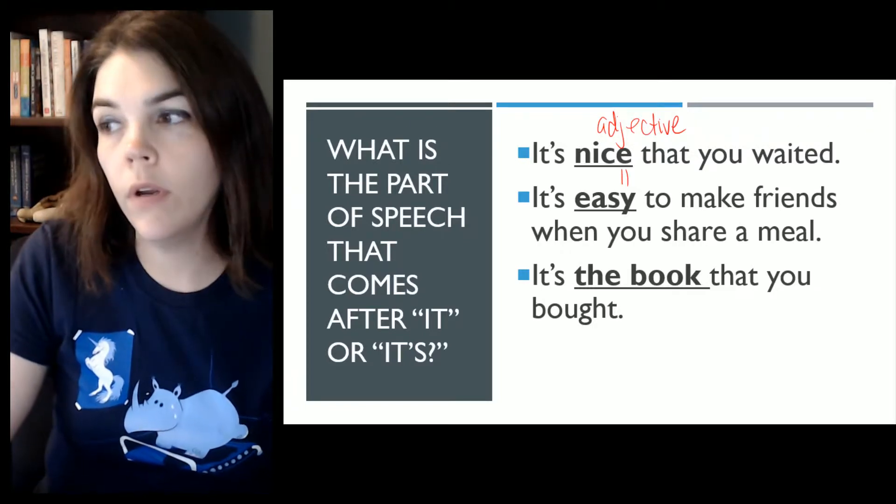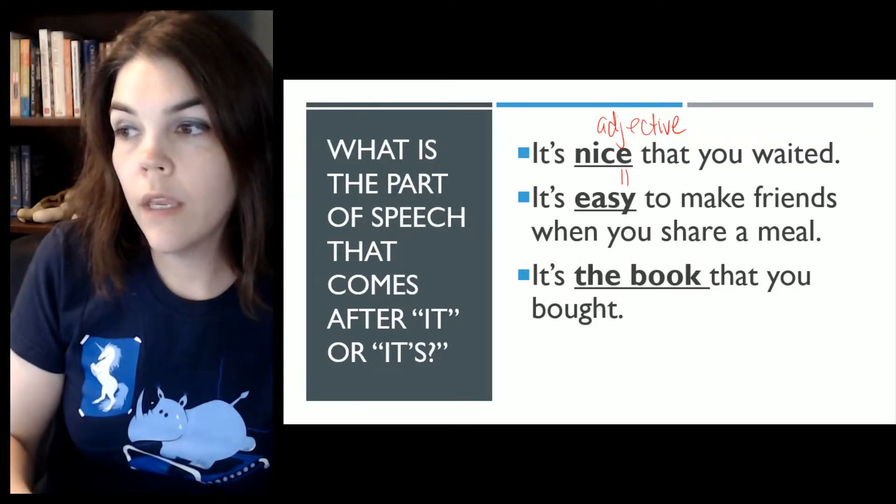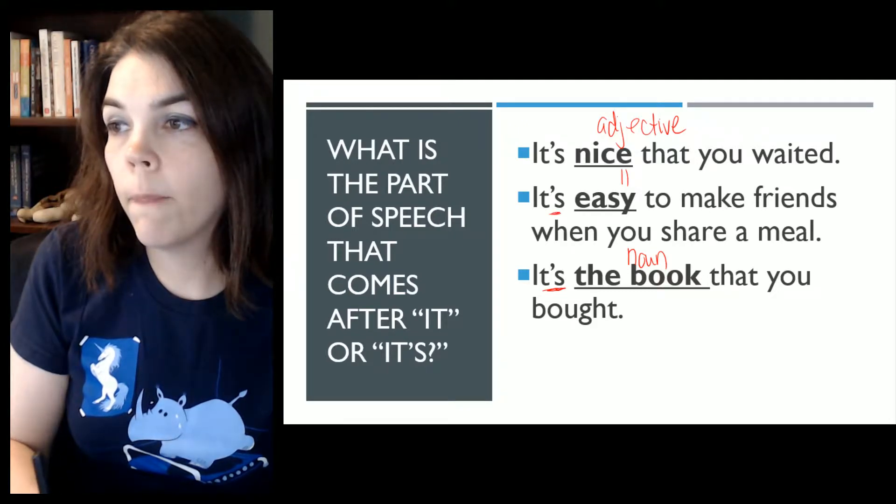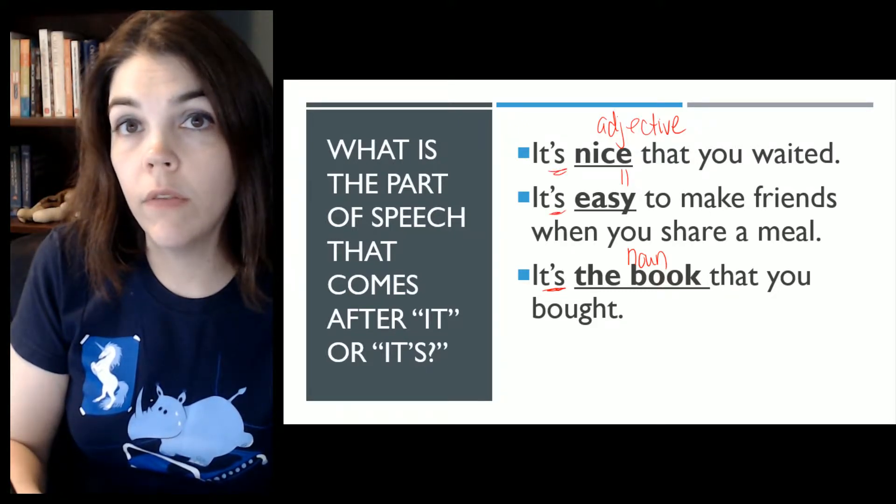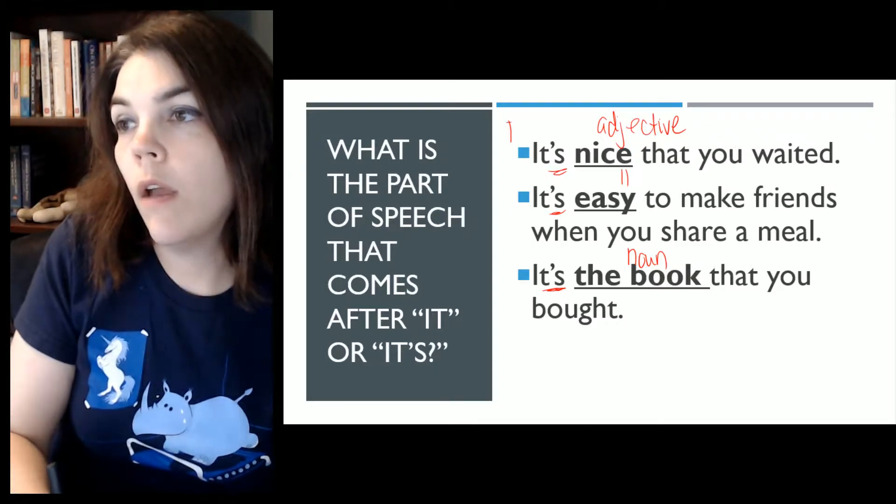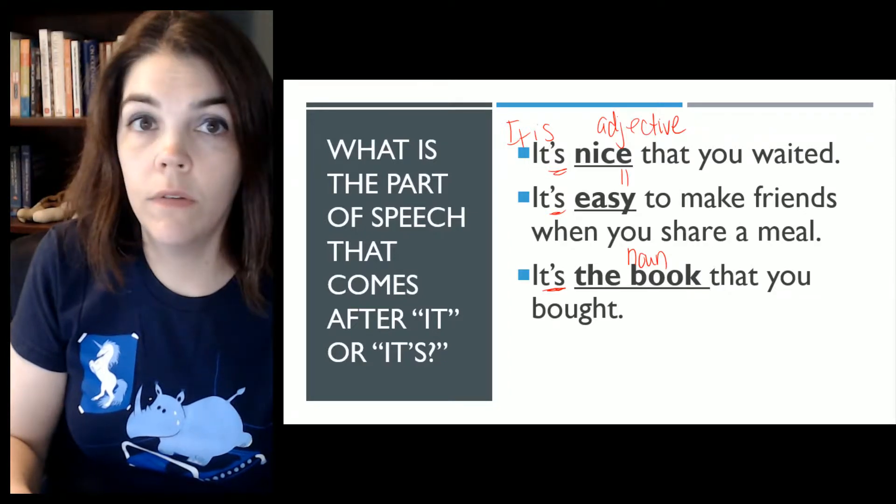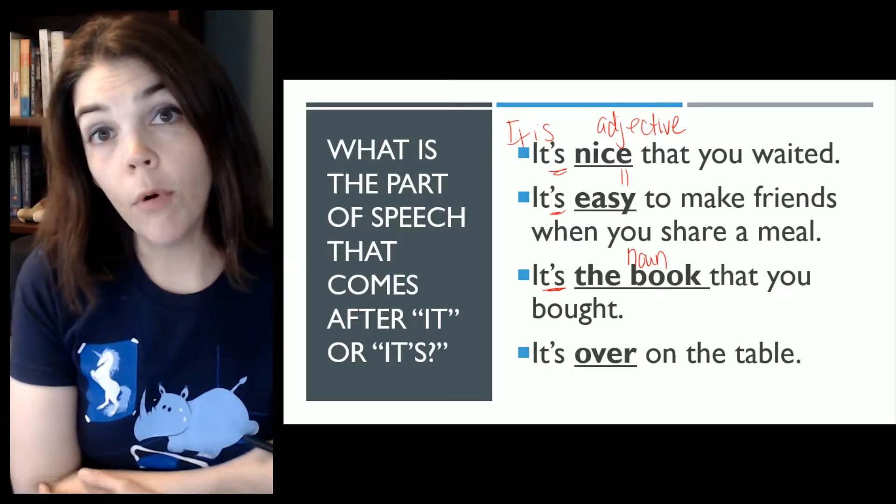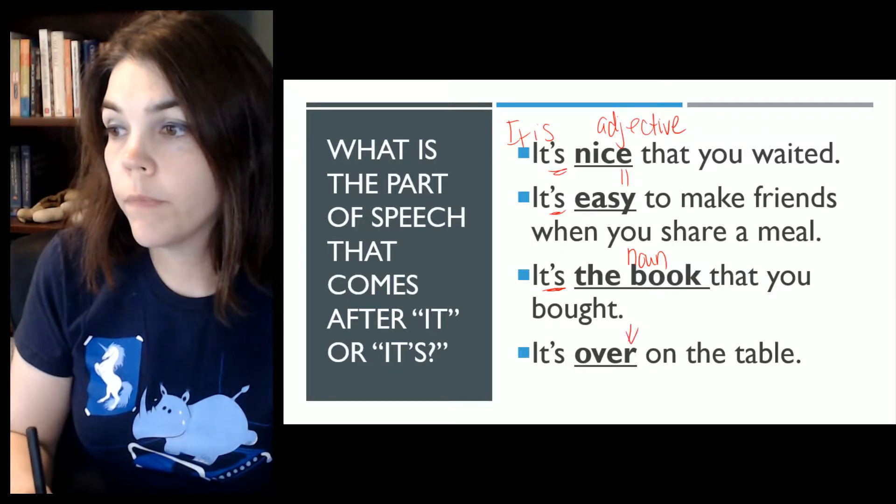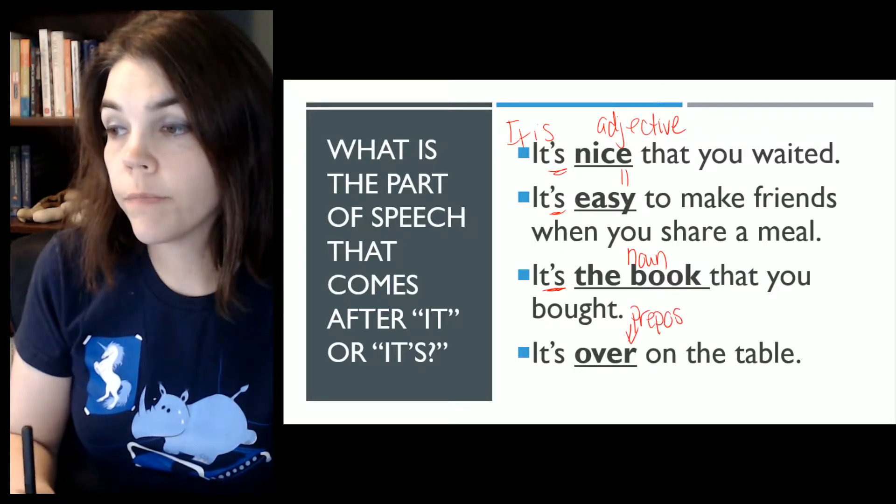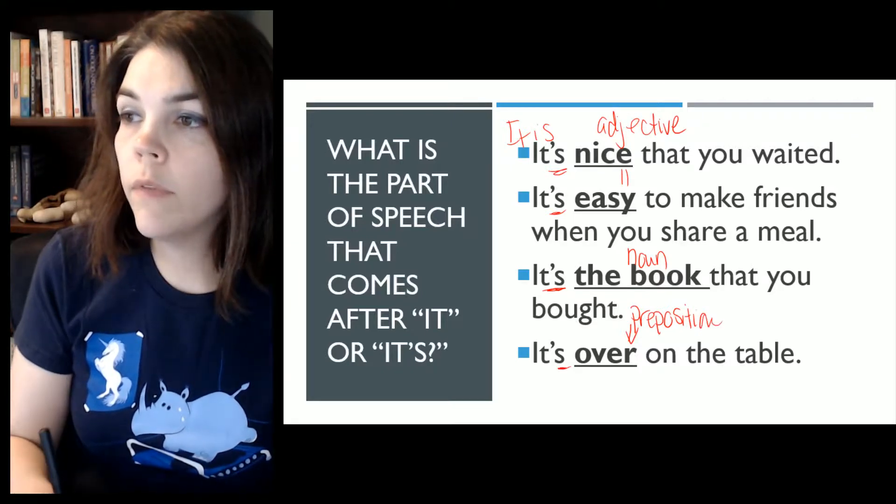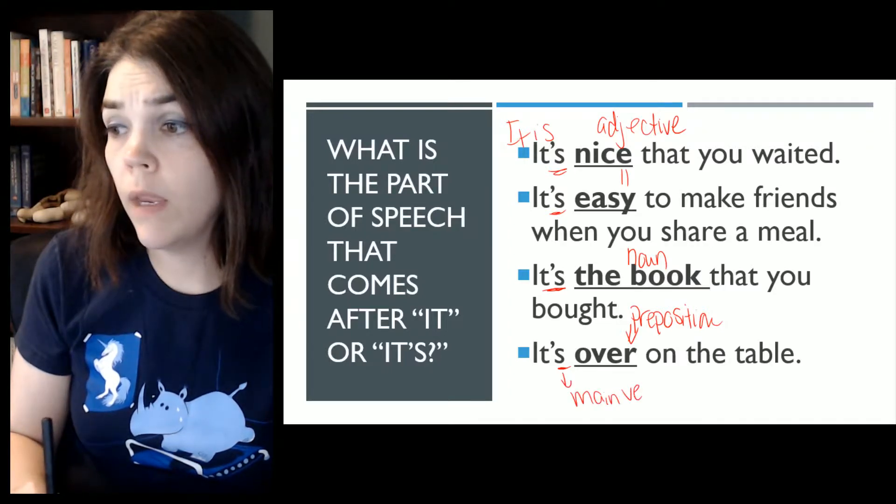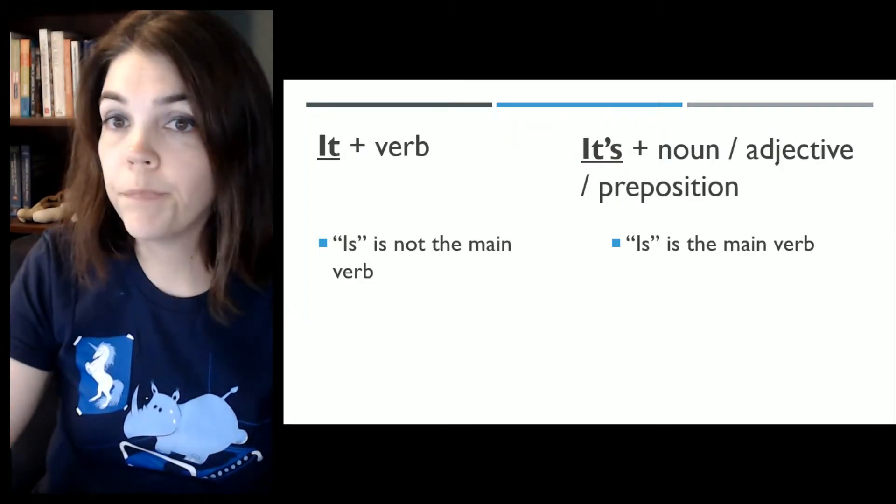What about it's the book that you bought? So here we have a noun and pointing out what is the main verb in these? Is. All of these mean it is. It is nice. It is easy. It is the book. It's over on the table. Main verb is not another verb. So that's the main difference.